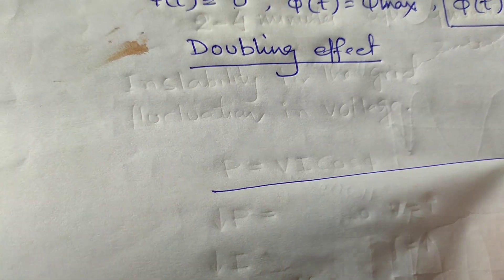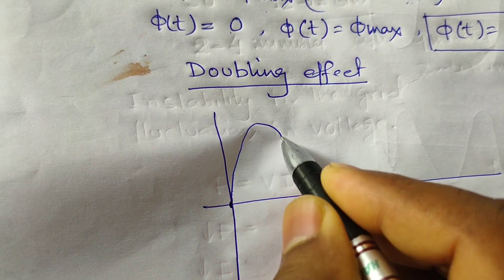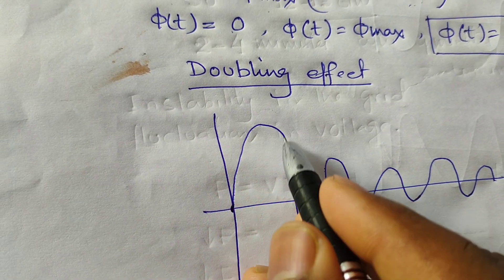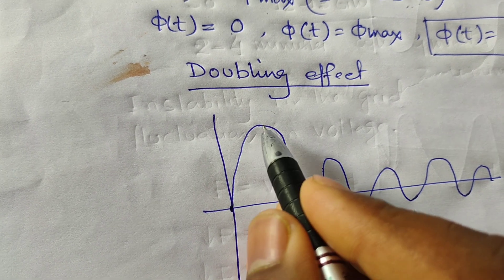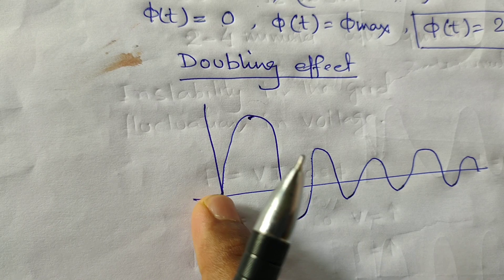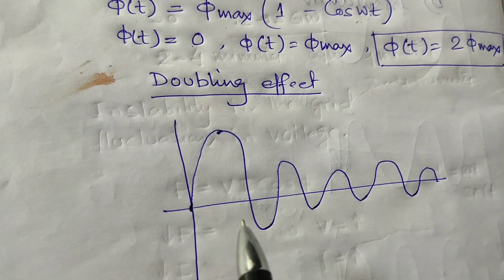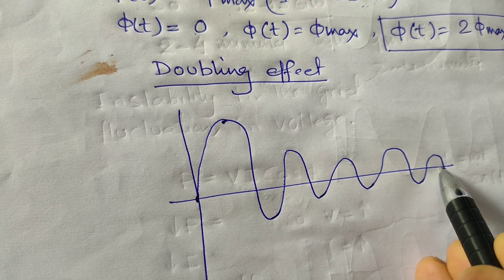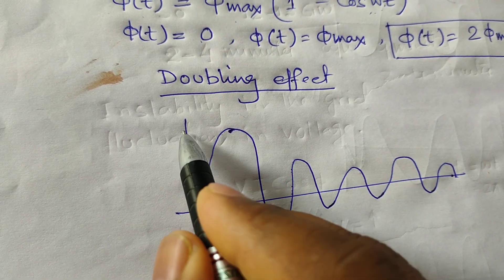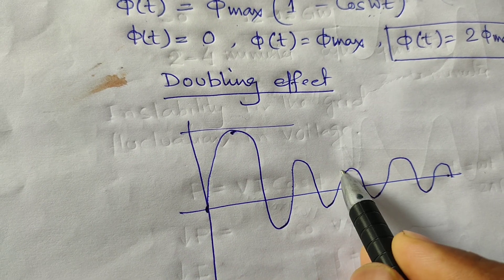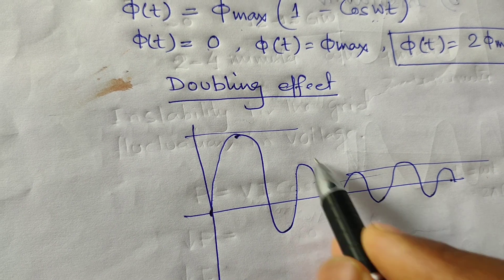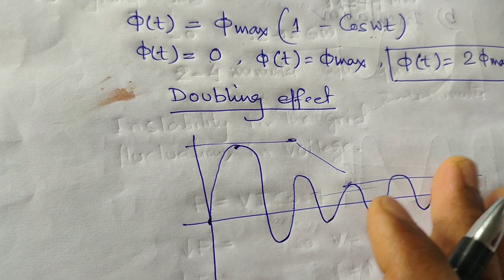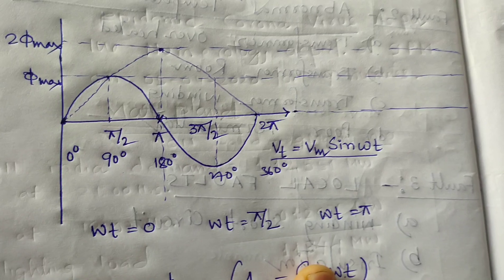When we switch on the transformer, the maximum flux is generated and a maximum peak current results. After reaching the saturation value, the current curve settles and the steady-state rated current is reached. The peak current above the steady-state value is the inrush current, also called the transient current. This peak represents the inrush or transient current.